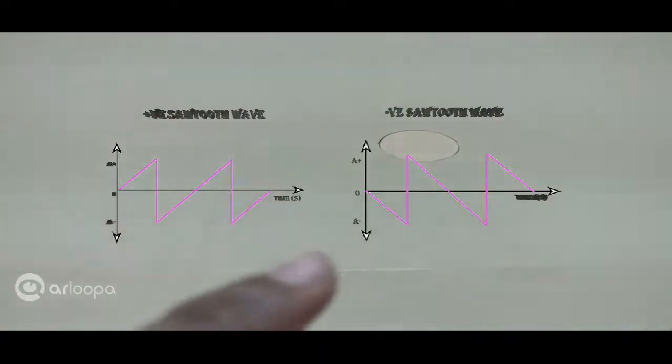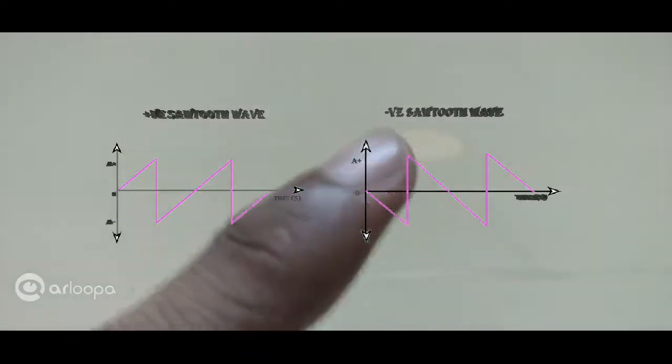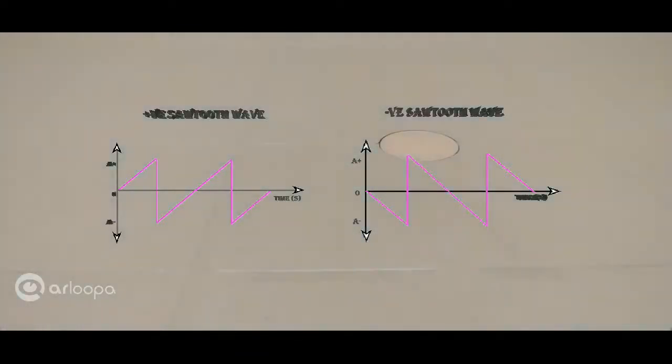In case of a negative sawtooth wave, the wave ramps downward and then sharply rises and this cycle goes on and on. Now, the most commonly used sawtooth wave is the positive sawtooth wave.